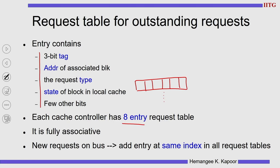Any time a request has to be sent you have to check whether there are conflicts. Whenever a response comes you have to compare the tag. We might want to compare the tag and the address every time, and how are you going to search this table? Searching this table has to be done exhaustively because they are not indexed on the address or the tag. Hence, we treat it as a fully associative data structure. This is not set associative, it is not direct map — it is a fully associative storage element.